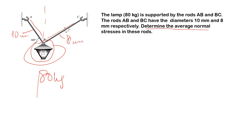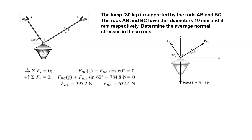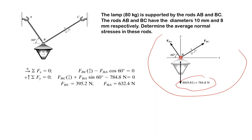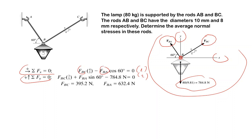The question asks us to determine the average normal stress in these rods. The first thing we do is draw the free body diagram at point B. The forces acting are the weight of the lamp, the BC force, and the force on rod BA. Writing sigma Fx = 0 and sigma Fy = 0, we get two equations and two unknowns. The angle is given by the slope defined by a 3-4-5 triangle.